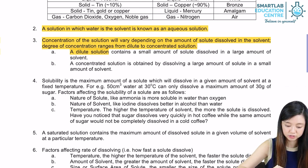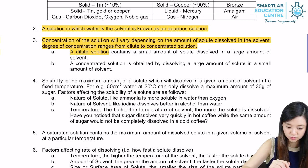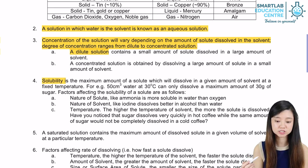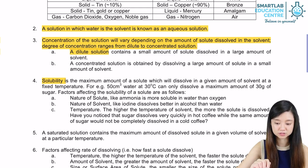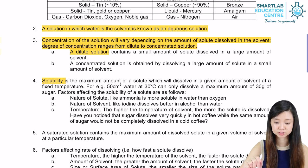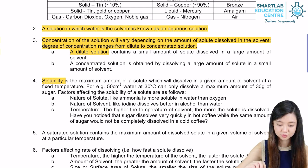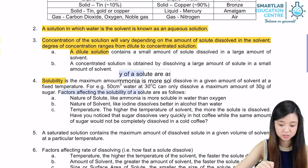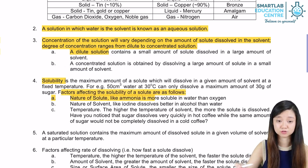Another word that we should know is solubility. This is the amount of solute that will dissolve in a given amount of solvent at a fixed temperature. The factors affecting the solubility of the solute are as follows.